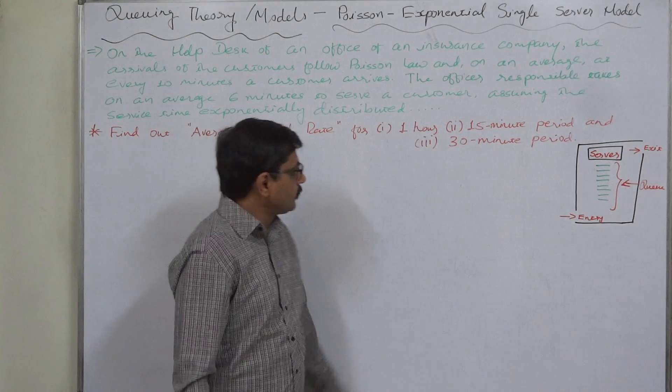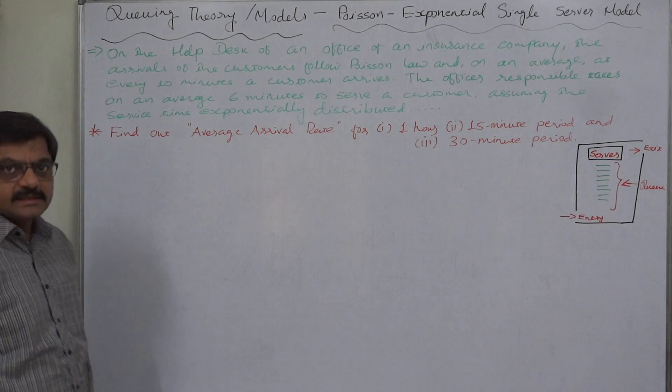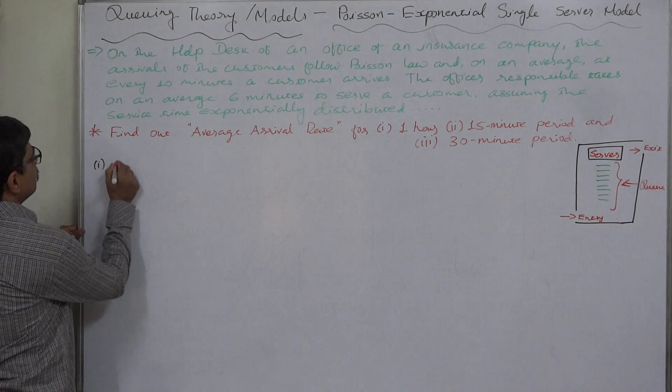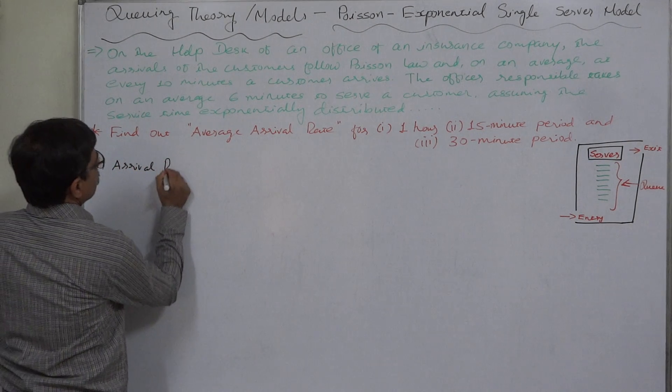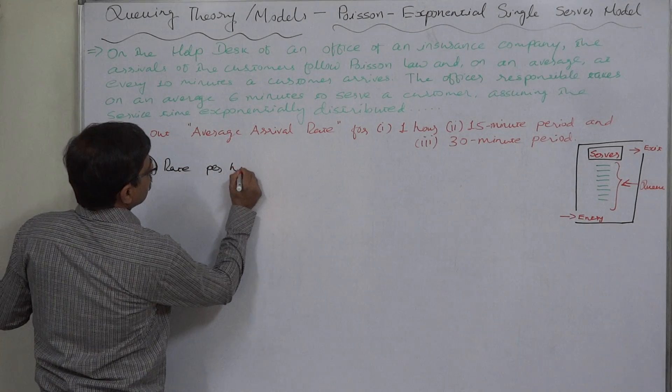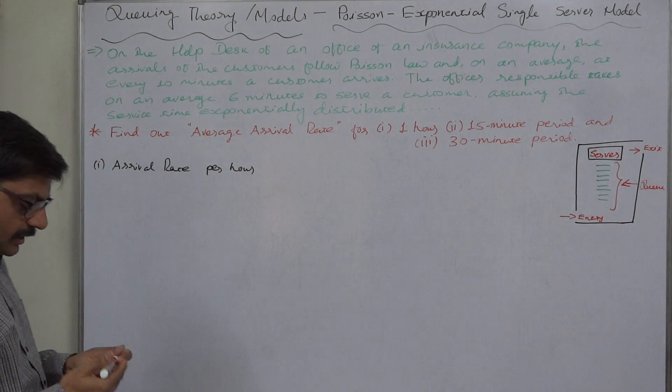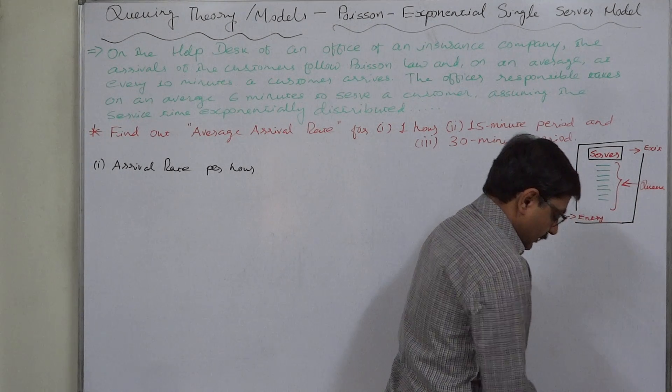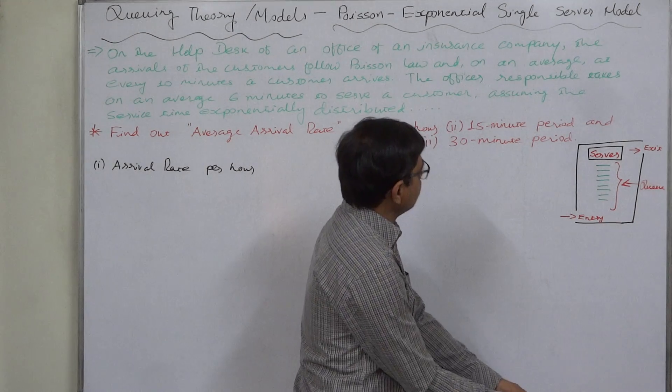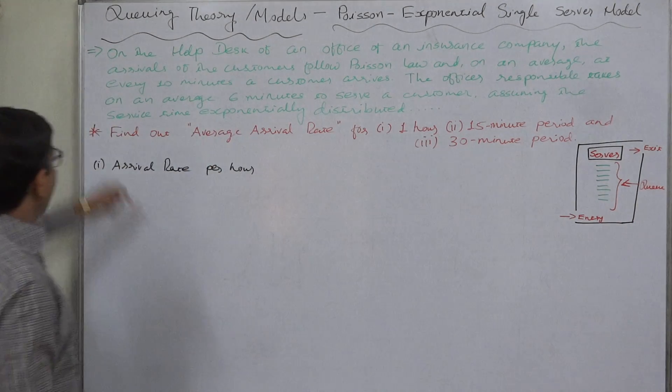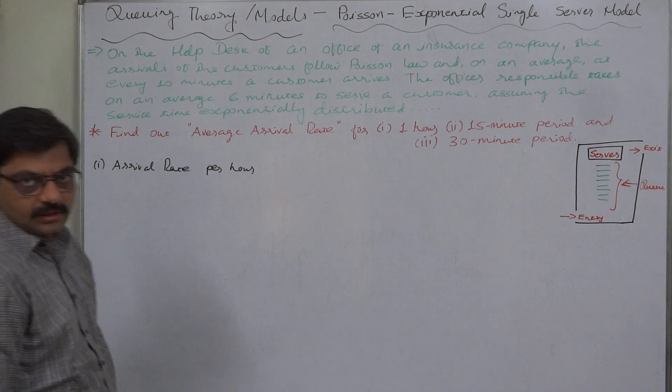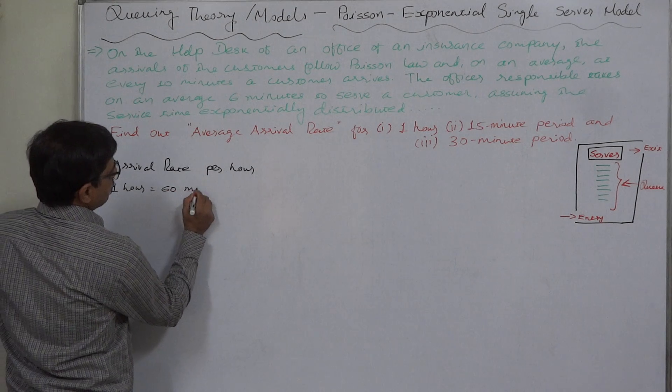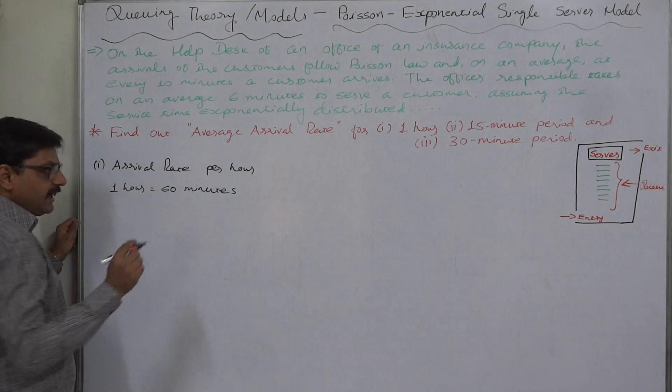In this case we have three different time intervals. In our calculations first we are going to find the average arrival rate, that is lambda for 1 hour. Now what is the information available about the number of arrivals? The information available is on an average at every 10 minutes a customer arrives. Now 1 hour equals to 60 minutes.